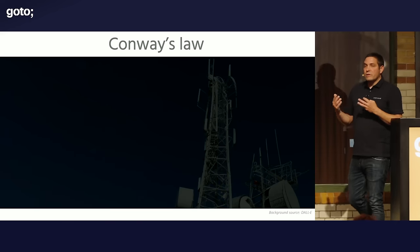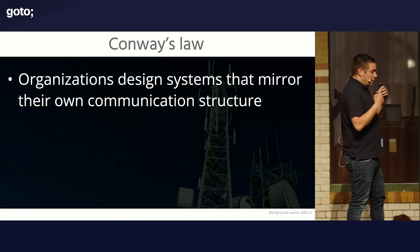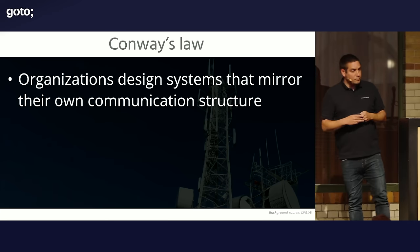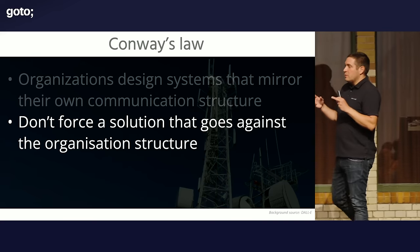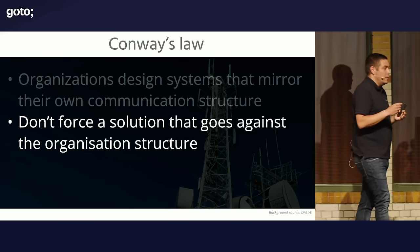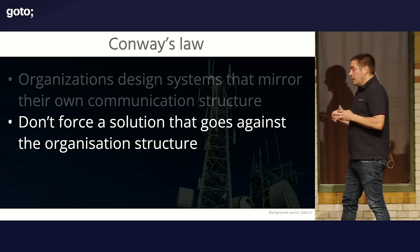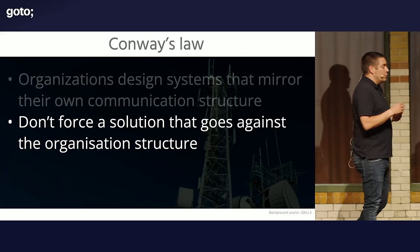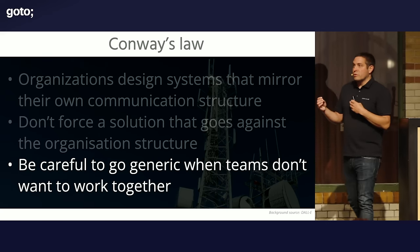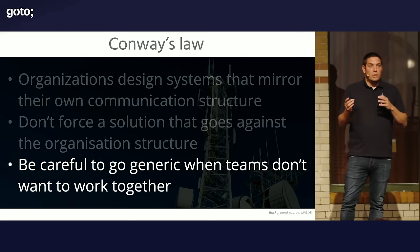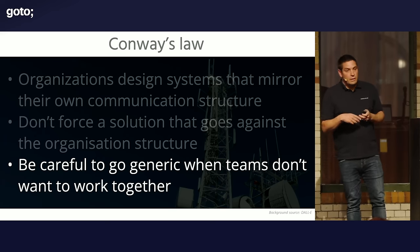There are also organizational factors. Melvin Conway said that organizations design systems that mirror their own communication structure — if you have three teams working on a compiler, you'll get a three-pass compiler. Don't try to force a solution that goes against the structure of your organization. If you have three teams that hate working together and they all have the same problem, you have two options: have them each build their own solution — maybe more work, but they won't fight — or force them to use a generic solution and you'll get fireworks, but not the kind you like. Consider organizational aspects: be careful going generic when teams don't want to work together, because they'll have discussions on priorities and what lands in the generic solution.